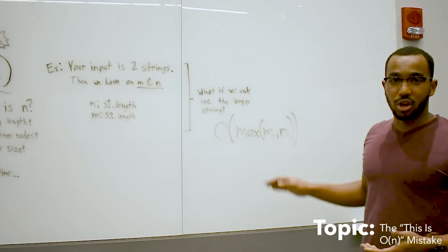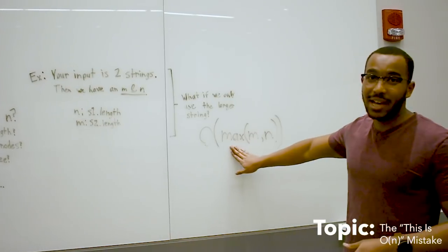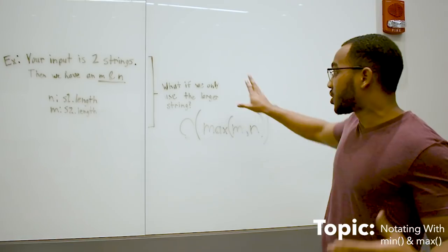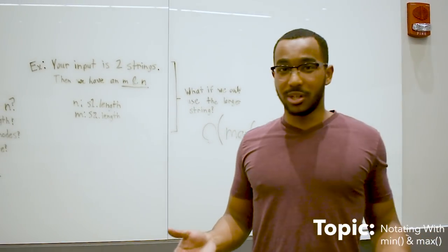So what if we're only using the larger string? Then we get into min and max notation where we say O of max m and n.